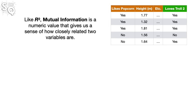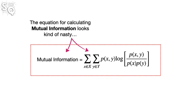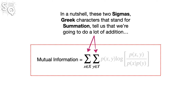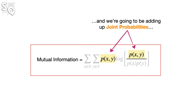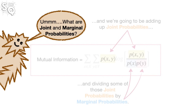Like R-squared, mutual information is a numeric value that gives us a sense of how closely related two variables are. The equation for calculating mutual information looks kind of nasty, but we'll go through it one step at a time. In a nutshell, the two sigmas — Greek characters that stand for summation — tell us that we're going to do a lot of addition. We're going to be adding up joint probabilities and dividing some of those joint probabilities by marginal probabilities.